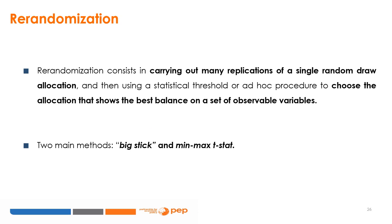Re-randomization consists in carrying out many replications of a single random draw allocation, and then using a statistical threshold or ad-hoc procedure to choose the allocation showing the best balance on a set of observable variables. We will cover two main re-randomization methods: big-stick and min-max t-stat.